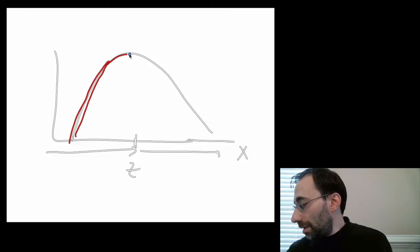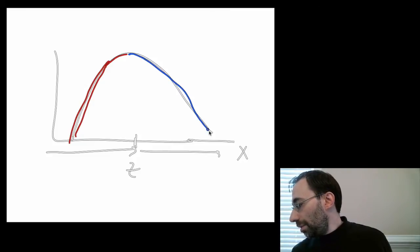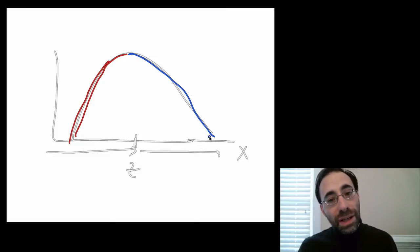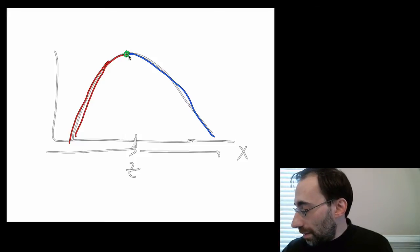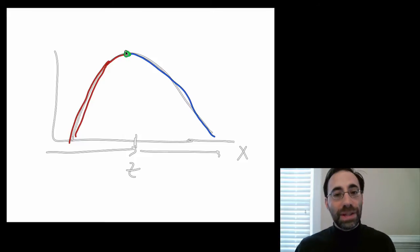Now over here, in blue, the function is decreasing. Again, as I move to the right, the values of the function get lower and lower. What about right here? On the green point, what's happening there? Nothing. The function at that very top of that function, it is neither increasing nor decreasing.